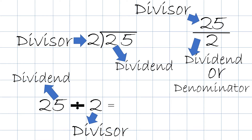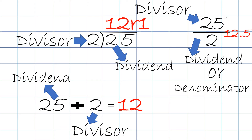So in review, what is the answer — 25 divided by 2? By the way, the answer in a division is called a quotient. So what is the quotient for 25 divided by 2? One of the ways we could say it is 12 remainder 1. Another way is 12.5 or 12 and a half. All of them are acceptable answers.